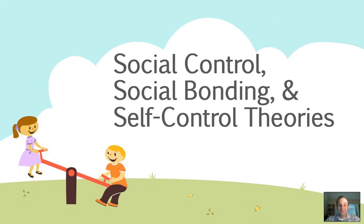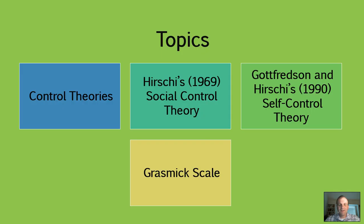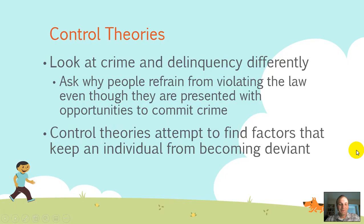Hi everyone, welcome to another video on criminological theories. Today we're going to be talking about control theories and the two major theoretical perspectives associated with control: social control, social bonding, and self-control theory. The major topics include control theories in general, Travis Hirschi's 1969 social control theory, Gottfredson and Hirschi's self-control theory, and the Grasmick scale, which helps assess and measure the notion of low self-control within individuals.